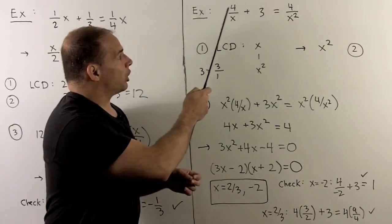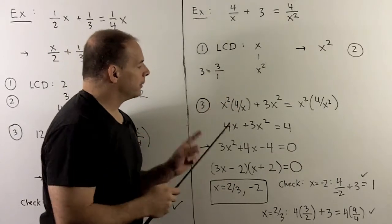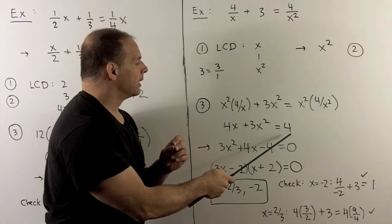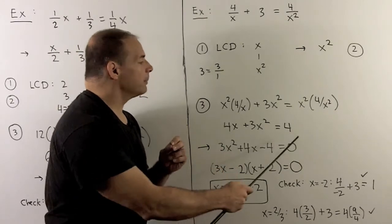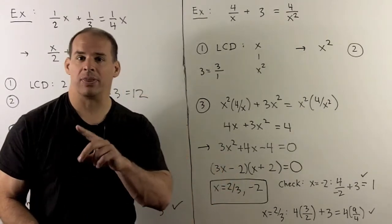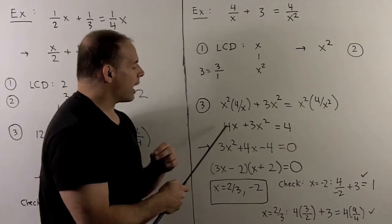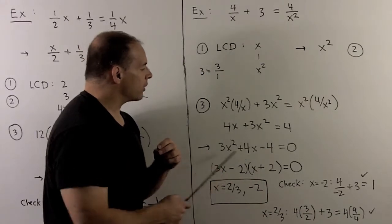We move on to the next step. We multiply each term in the equation by x squared. That's going to give me 4x plus 3x squared equals 4. We have a polynomial equation. Check my work - there are no fractions. Good.